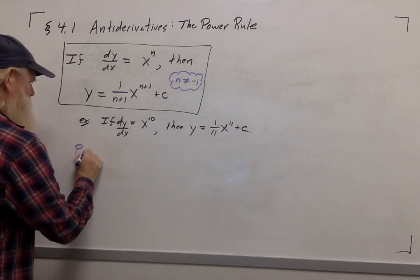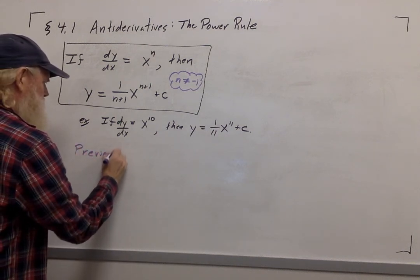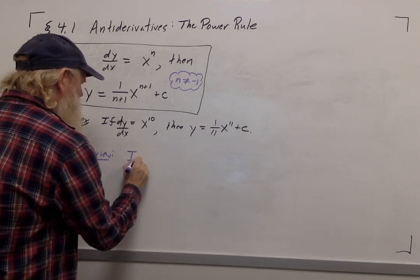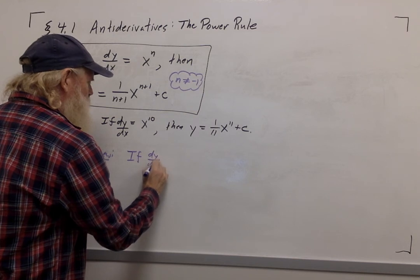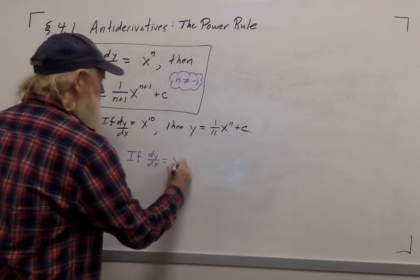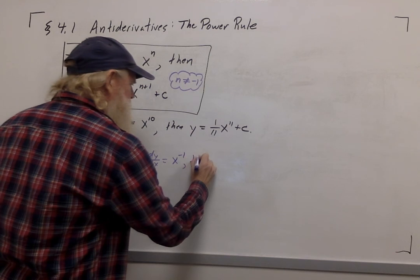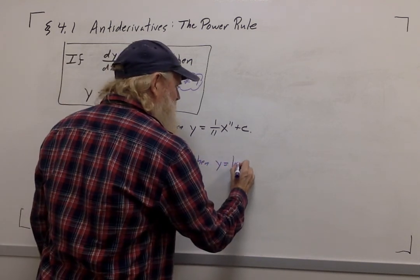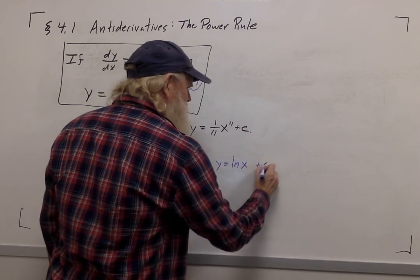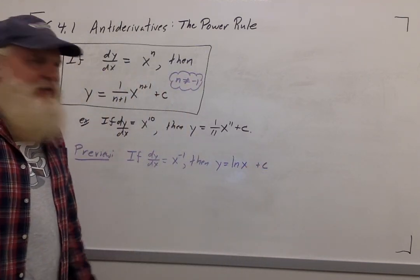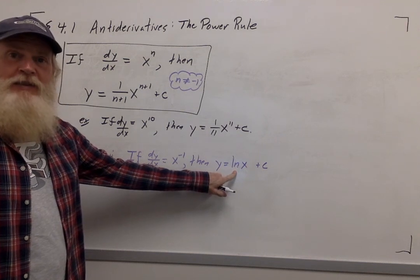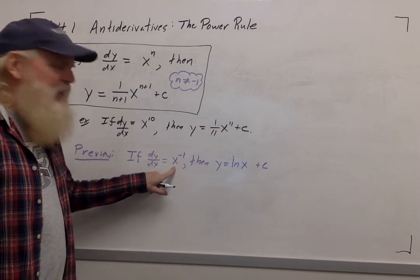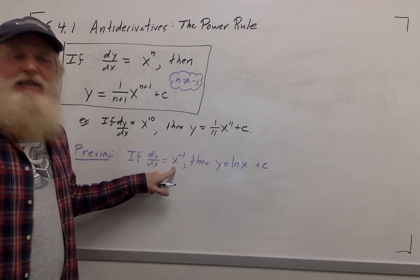And here's a preview of something we'll see later in the semester. If the derivative of y with respect to x is equal to x to the negative 1, then y is going to be the natural logarithm of x plus c. So we haven't been talking about logarithms yet this semester. That's going to come a little bit later, but it turns out that the natural logarithm is the anti-derivative of x to the negative 1.